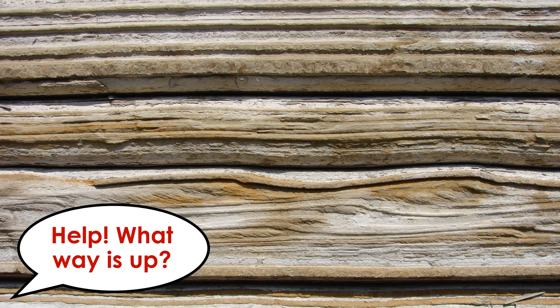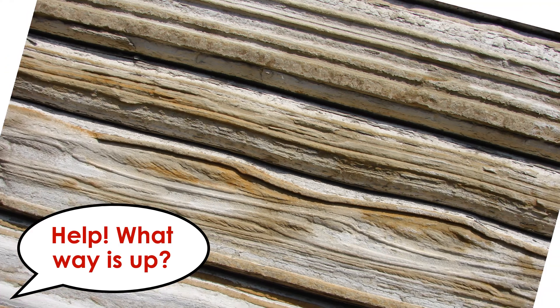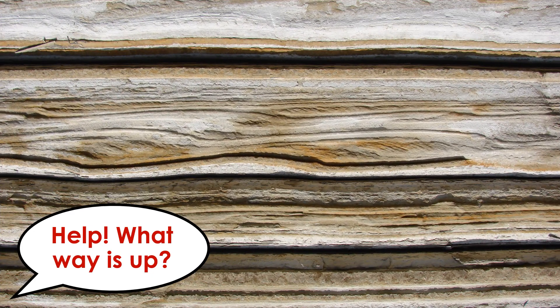That said, it's not always so easy. If rocks can be tilted and angled and distorted after they form, that means they can also be flipped over entirely. If so, the youngest rocks may occur below the oldest rocks. Don't worry though — this is fairly uncommon. You can usually tell which way is up.